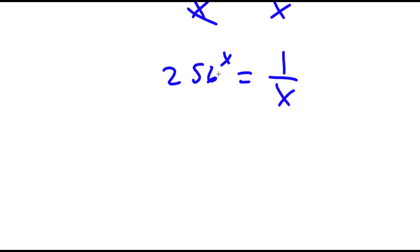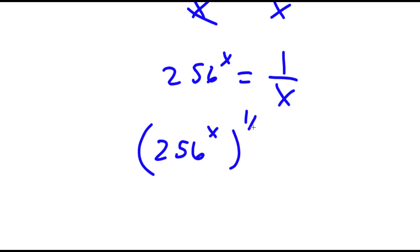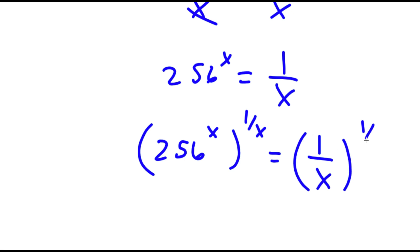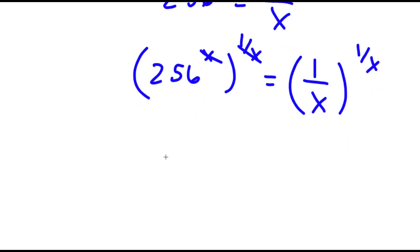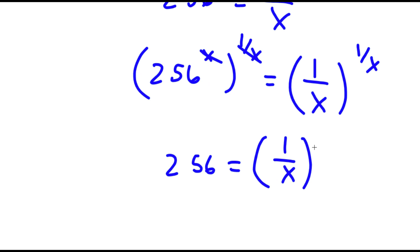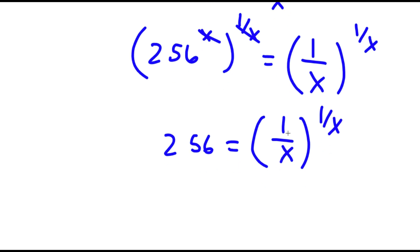Now I'm going to take the power of 1 over x on both sides, so I have 256 to the power of x to the power of 1 over x is equal to 1 over x to the power of 1 over x. Now x and 1 over x cancel out, so now I have 256 is equal to 1 over x to the power of 1 over x.